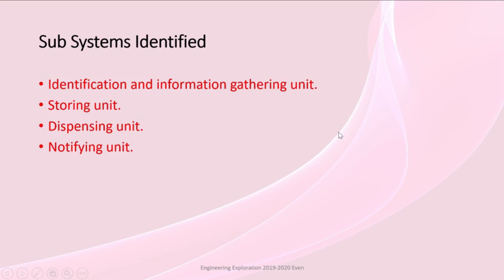The next slide explains the subsystems identified in our course project. The first one is the identification, also called the authentication and information gathering unit, followed by the storing unit, dispensing unit, and notifying unit.